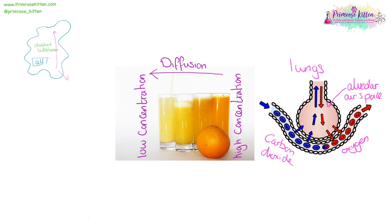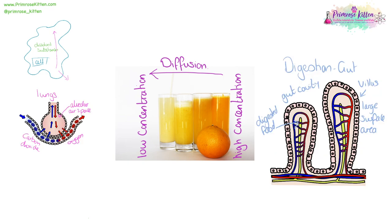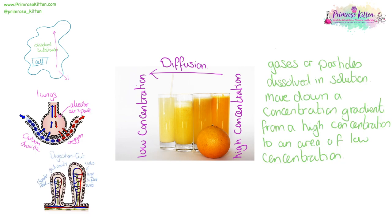These walls are only one cell thick, and carbon dioxide is going to diffuse from the blood into the lungs so that it can be breathed out, and oxygen is going to diffuse from the lungs into the blood so it can be taken around the body. Also in the gut, these are the villi of the gut — they are one cell thick, just like the alveoli, and they have a very large surface area. Digested food moves from the gut cavity into the blood so it can be taken around the rest of the body. So diffusion is the movement of gases or any particles dissolved in solution, moving down a concentration gradient from high concentration to an area of low concentration.